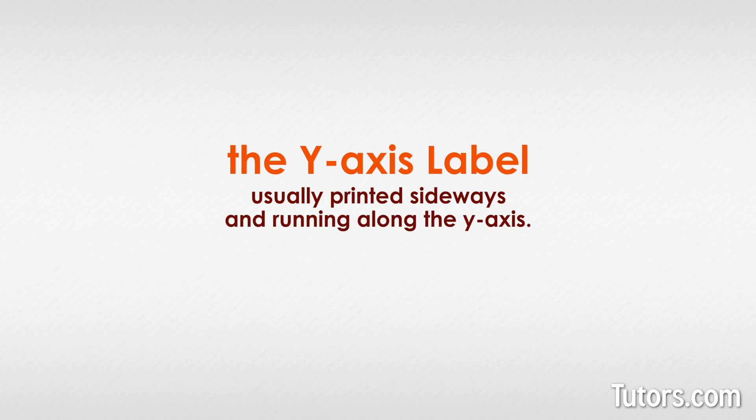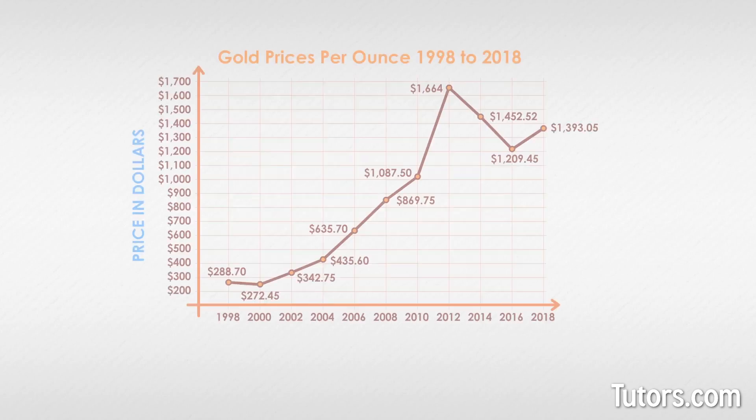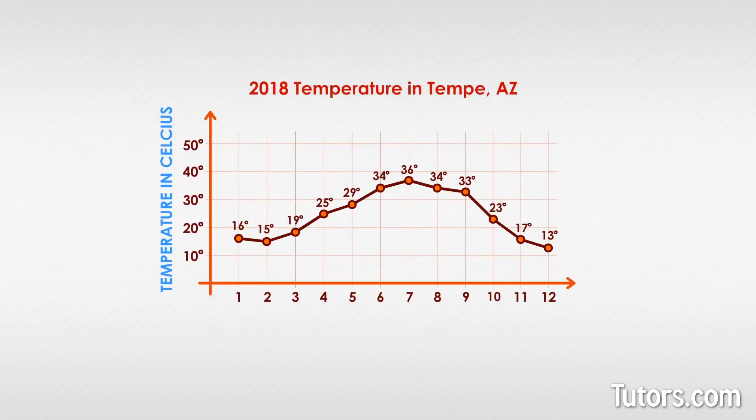A line graph also has axis labels, with the y-axis label usually printed sideways and running along the y-axis. This will be the quantity, like price in dollars or temperature in Celsius.